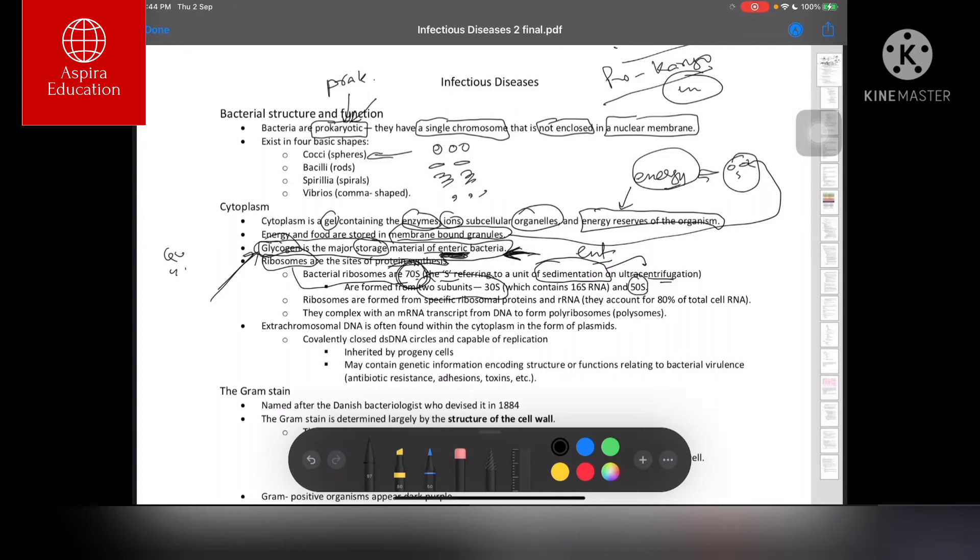This looks like a figure of 8—this is 50S and this is 30S, and together the ribosomal complex becomes 70S. It's a primitive type but very effective. Ribosomes are formed from specific ribosomal proteins and ribosomal RNA. They account for 80% of total cellular RNA.